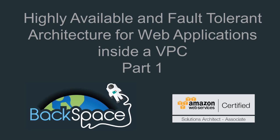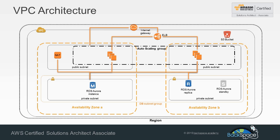Welcome to the Backspace Academy lab on creating a highly available and fault-tolerant architecture for web applications inside a VPC. This lab will be the culmination of many aspects that you've learned throughout the course. The focus will be on making sure that you fully understand all of the concepts that are essential for certification. The architecture we'll be developing will be typical of what you'd expect from a WordPress application or an e-commerce site like Magento.